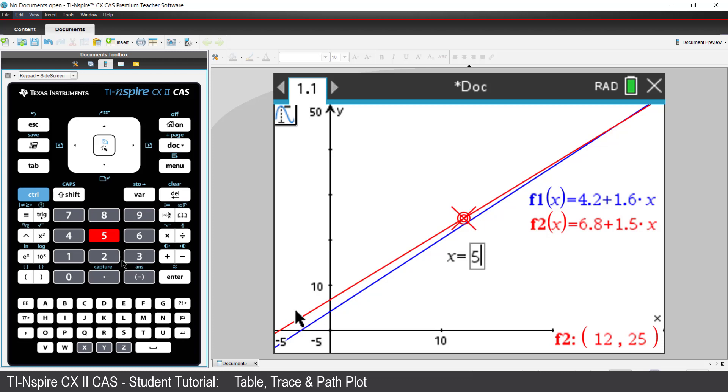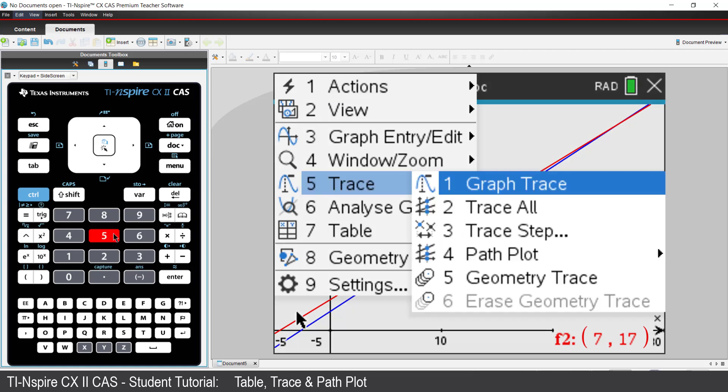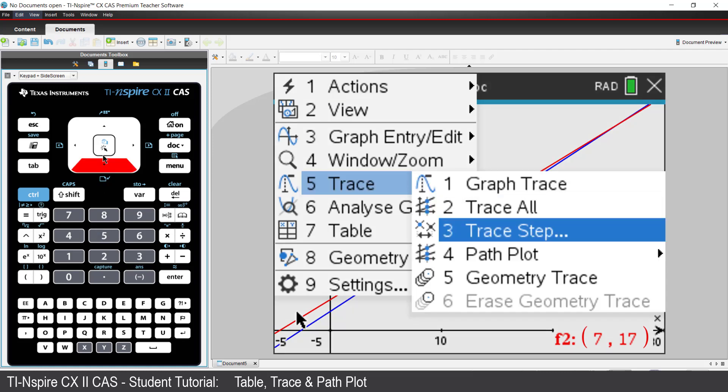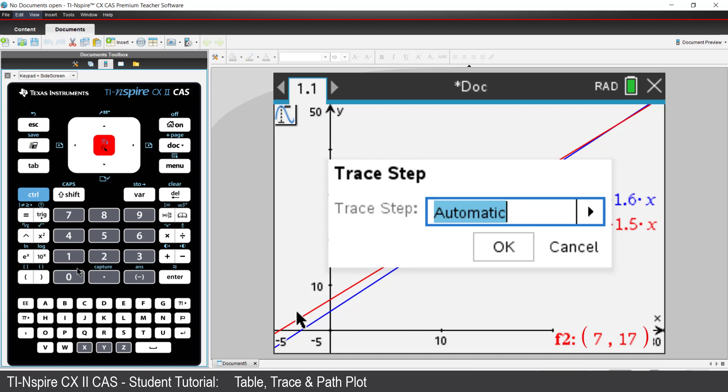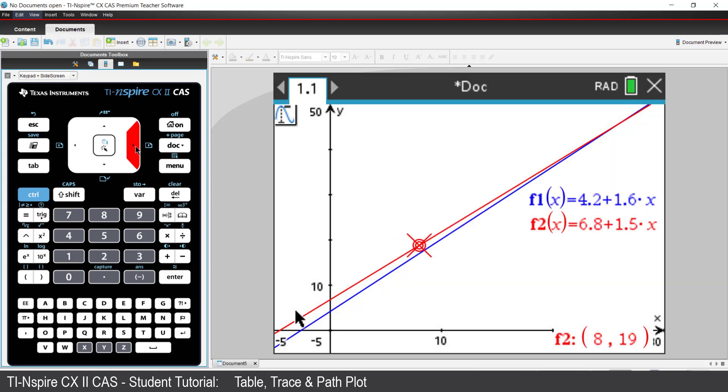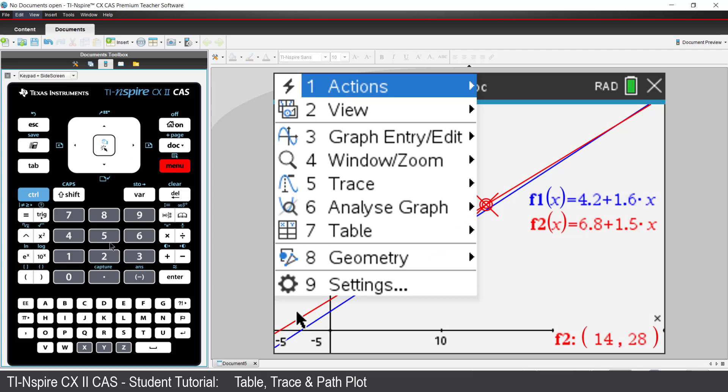To jump to a specific value, simply type it in using the keypad. You can also adjust the step increment by pressing Menu, select Trace, followed by Trace Setup. You can do a comparison of two fares by selecting Trace All.